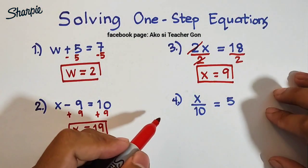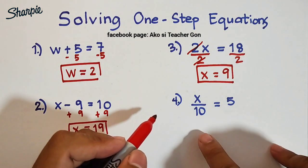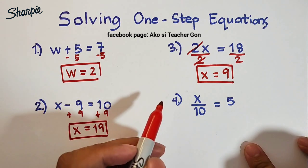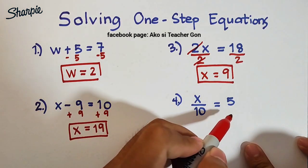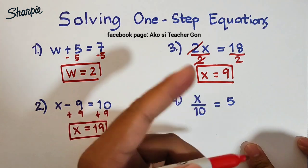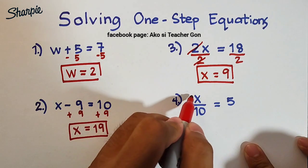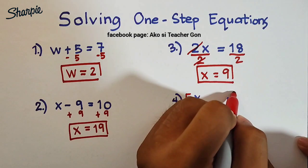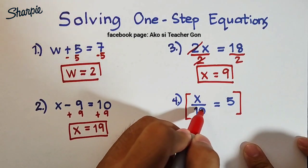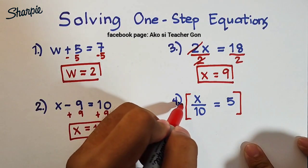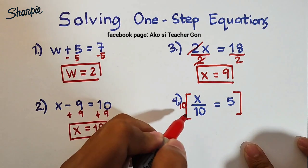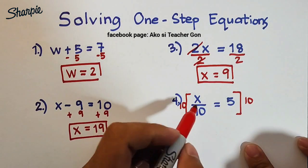Okay, now let's go with number four. For number four we are given x/10 = 5. So what we need to do here is to multiply. As you can see, you have here your 10, so what we need to do is multiply both sides of the equation by 10.